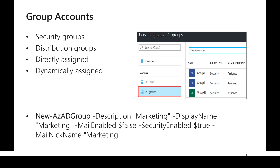With dynamically assigned groups, we can specify rules for adding users. For example, if a user belongs to a particular department or hierarchy they should automatically be part of a specific group — like users in financial services sub-organization being automatically added to the financial services security group — without explicitly assigning them.